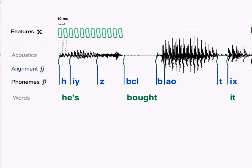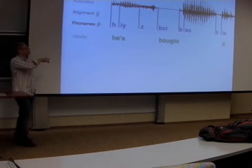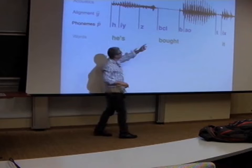The notation: X-bar denotes the features — a sequence of vectors. P-bar is a sequence of phonemes. We want to find the alignment sequence Y-bar, which is a sequence of times given in terms of frame number — frame zero, frame three, frame 17, and so on. So we would like to predict Y-bar.